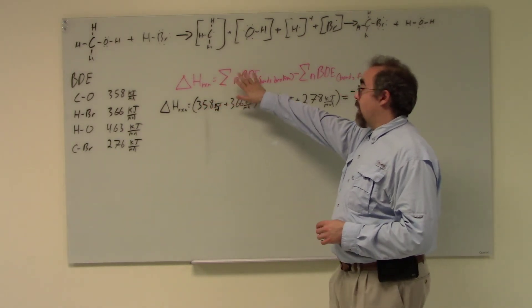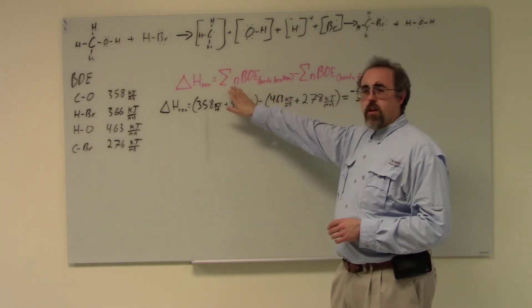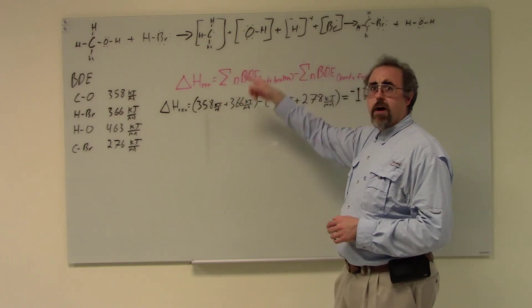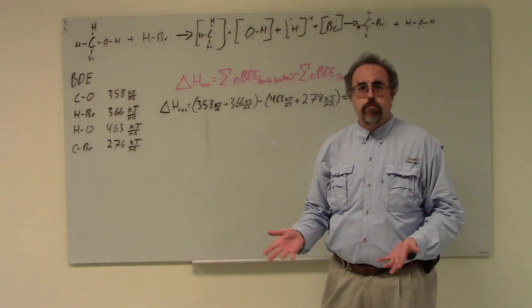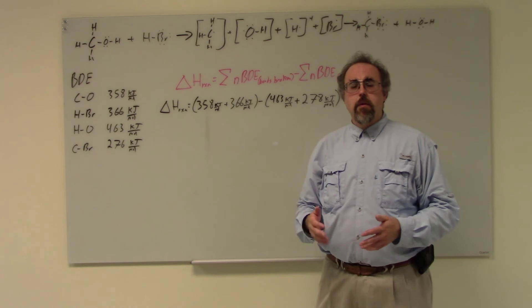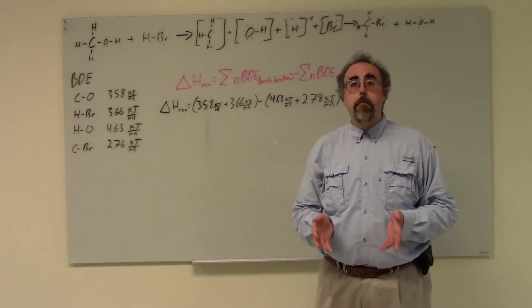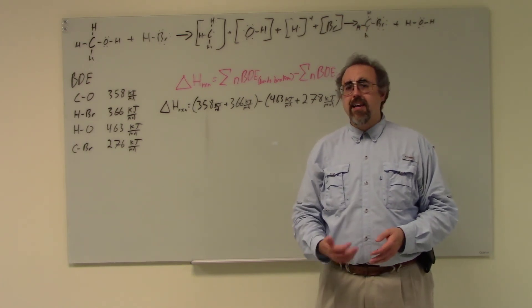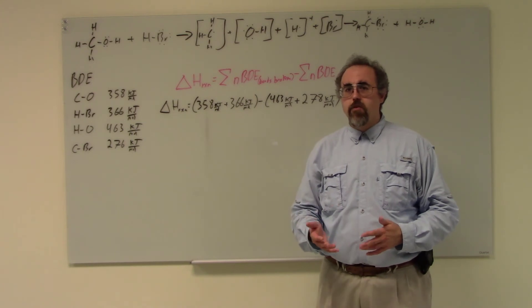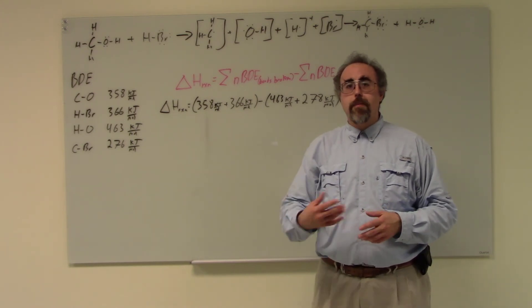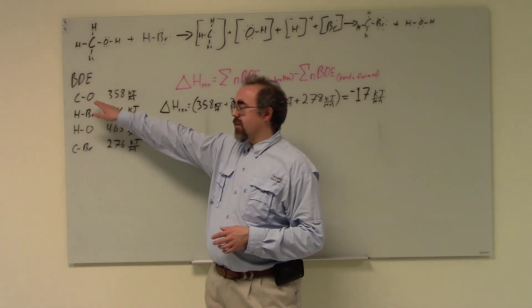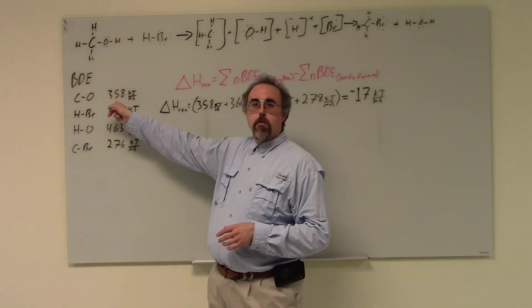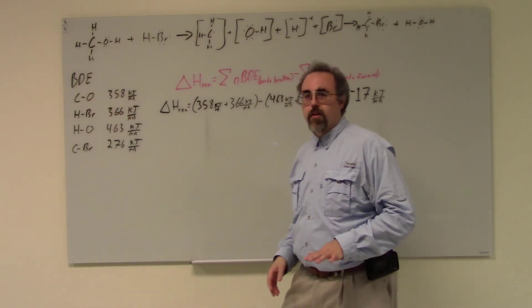All I'm going to do is take the bond dissociation enthalpy, once again times by the number of bonds. I only have one of each bond, so it's all times by one. So it's fairly straightforward here. But if I was to, say, break two or three of that particular type of bond - and keep in mind here, double bonds and triple bonds would only count as one of their respective type. So if it was a carbon-oxygen double bond, this would be a different number, it would be a higher number, you'd have to look that one up.